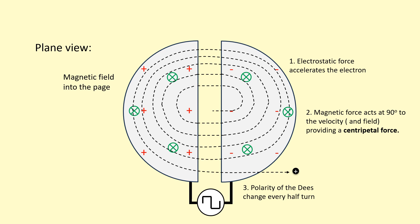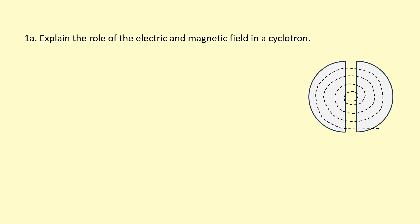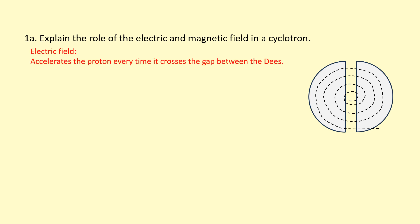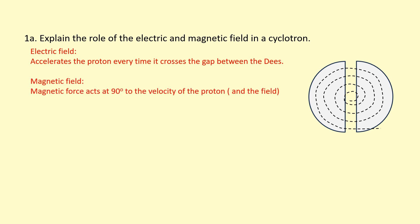This continues — the polarity switches and it accelerates across each gap, the radius of the circle increasing each time, and eventually it comes out at a very high velocity near the speed of light. Question 1a: explain the role of the electric field and magnetic field in a cyclotron. The electric field's job is to accelerate the proton — to increase its speed — every time it crosses the gap between the D's, timed so the speed increases each crossing. The magnetic field's job is simply to keep the particle moving in a circle — a spiral, because it's speeding up — exerting a force at 90 degrees to the velocity, providing centripetal force.